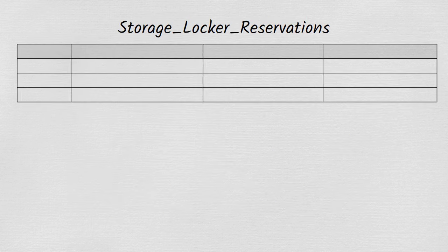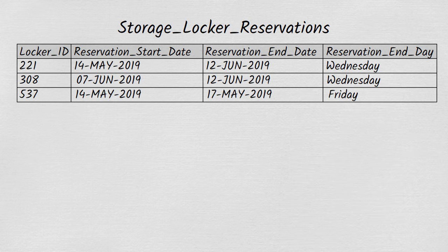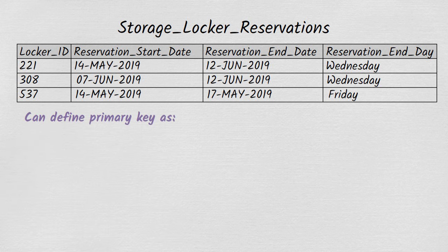The storage locker reservations table contains one row for each instance of somebody reserving a storage locker. For example, someone has reserved locker 221 for the period from the 14th of May 2019 to the 12th of June 2019. The combination of locker ID and reservation start date uniquely identifies a reservation, because you can't have two reservations for the same locker from the same start date. Therefore, we can define the primary key as locker ID and reservation start date. From the looks of things, the table is in second normal form, because there don't seem to be any part-key dependencies — everything is dependent on the entire primary key.